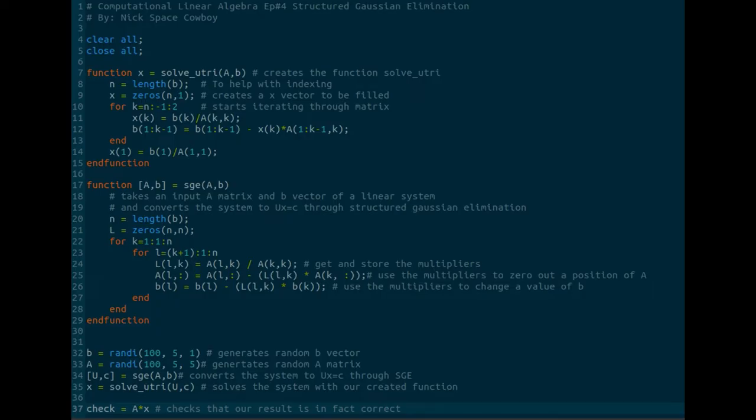So here we have the octave code from the fourth episode on structured Gaussian elimination. I'll leave a link to it in the description down below. But I want to ask you one quick question. Can you pinpoint out where in this we are getting an upper triangular matrix out? Because to do this decomposition, we're going to need to find a way to get an upper triangular matrix and a lower triangular matrix. There should be one clear glaring place where we get an upper triangular matrix.